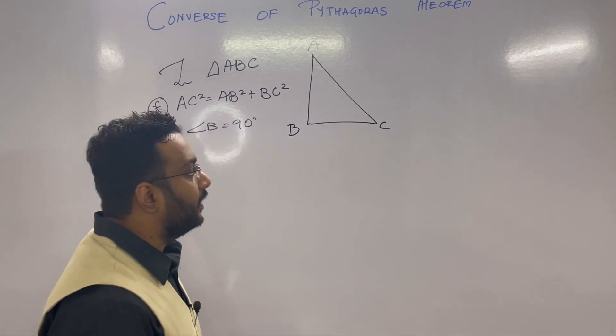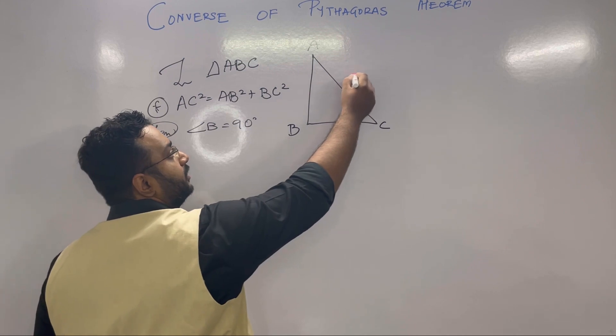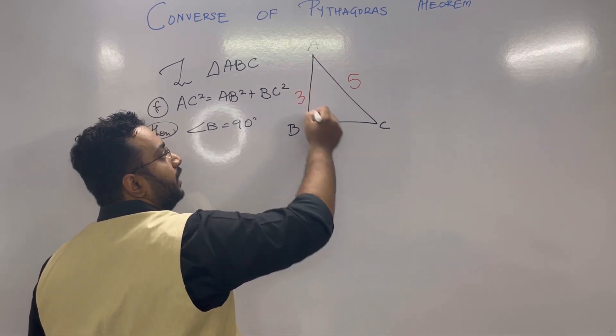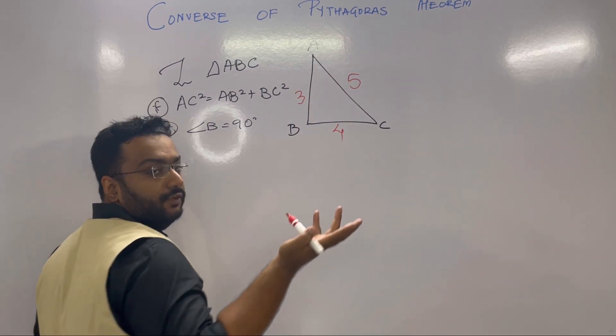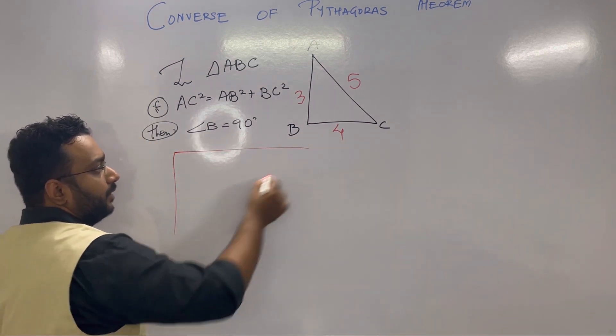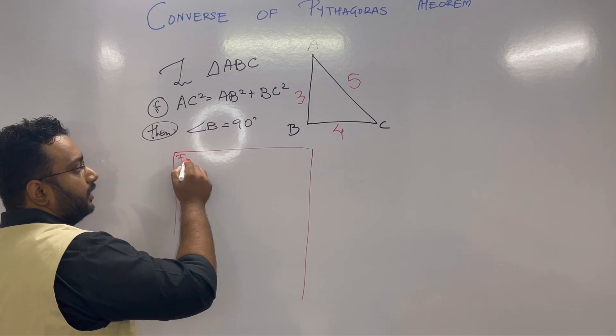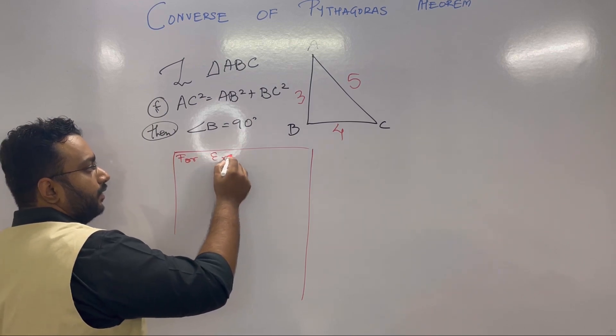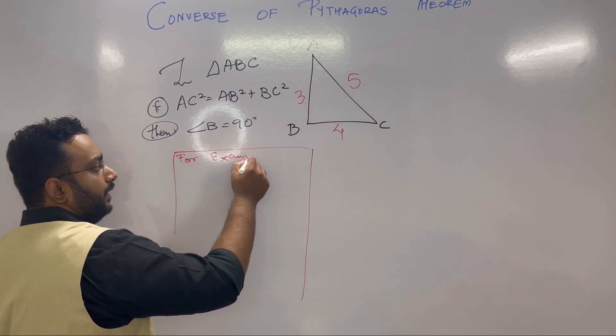Let me help you with an example. Suppose the hypotenuse is 5, this side is 3, and this is 4. This is just an example - we're trying to learn this with help of an example. We will firstly take the hypotenuse, so hypotenuse AC square is 5